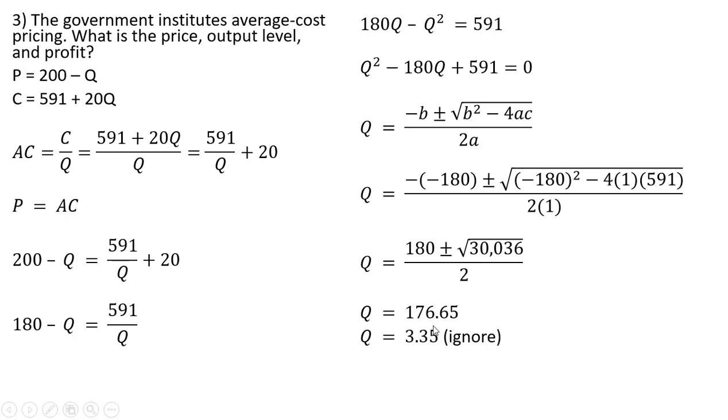The government planners would prefer the higher level of output, which would be associated with a lower price. So ignoring the 3.35, let's get the price.